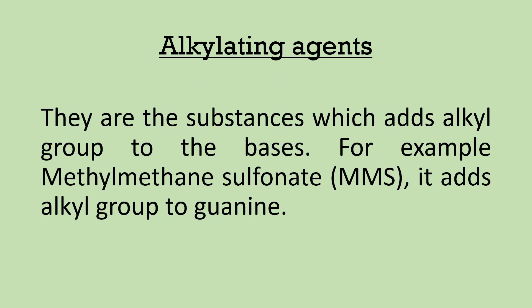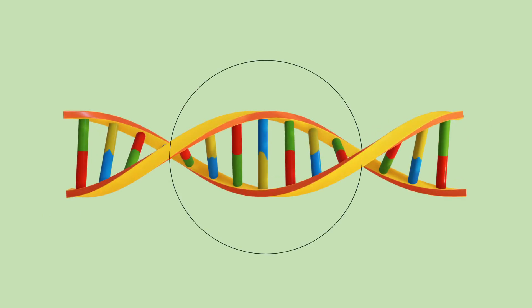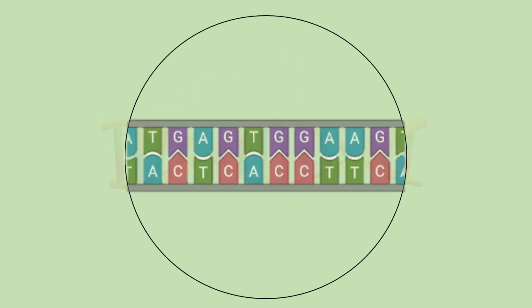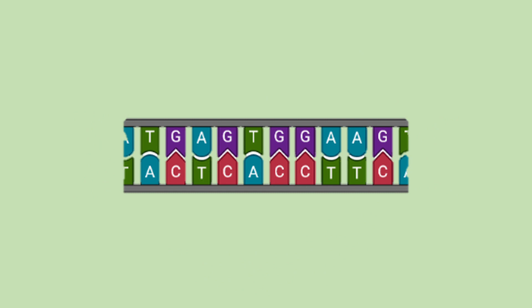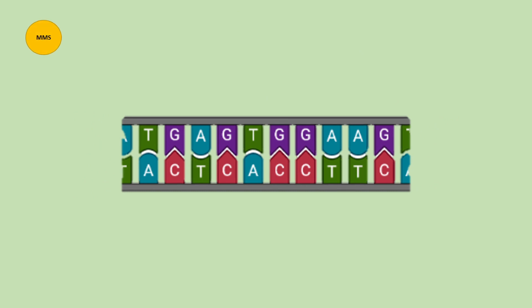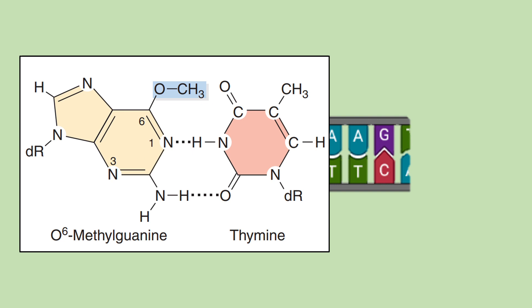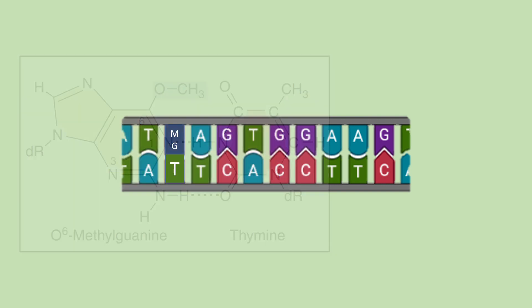Alkylating agents are substances which add an alkyl group to the bases — for example, methylmethane sulfonate (MMS), which adds an alkyl group to guanine. MMS reacts with guanine to form methylguanine. Methylguanine pairs with thymine rather than cytosine, thus creating a transition mutation.